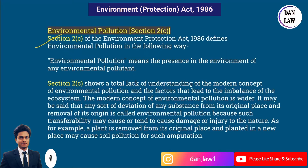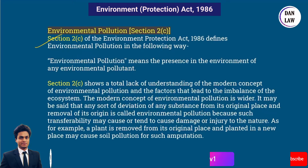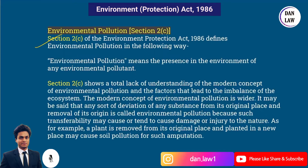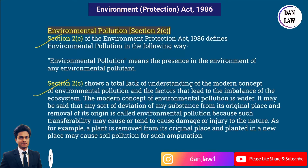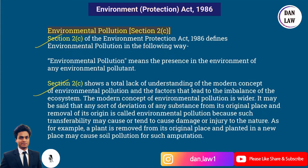Section 2(c) talks about 'environmental pollution', which means the presence in the environment of any environmental pollutant. Section 2(c) shows a total lack of understanding of the modern concept of environmental pollution and the factors that lead to the imbalance of the ecosystem. The modern concept of environmental pollution is wider — it may be said that any deviation of any substance from its original place and removal of its origin is called environmental pollution, as such transferability may cause damage or injury to nature.